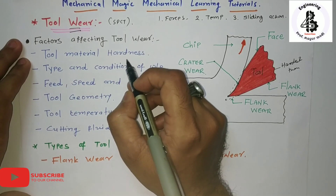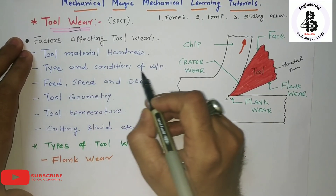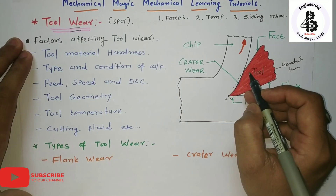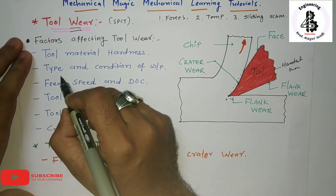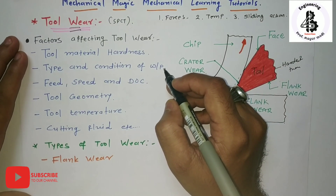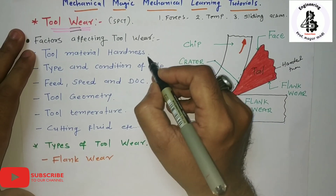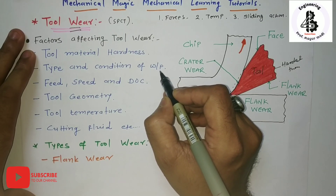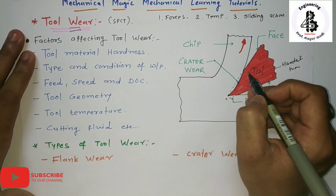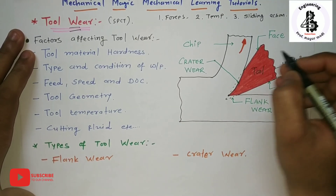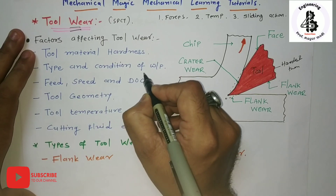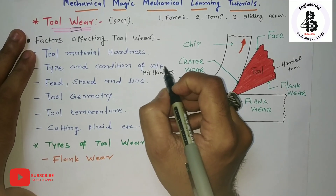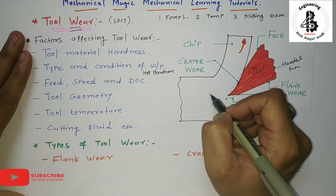The second factor is the type and condition of the workpiece. We already know that at higher temperatures, hardness is lowered. So when the workpiece material is at elevated temperatures, the tool material must have hot hardness - not only hardness at room temperature, but hot hardness - otherwise tool wear will take place.